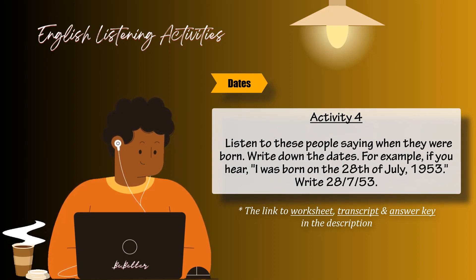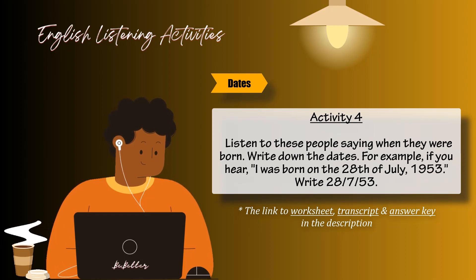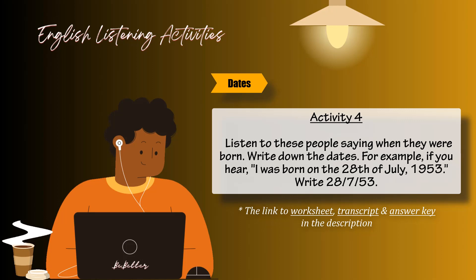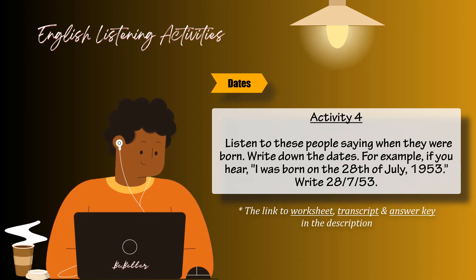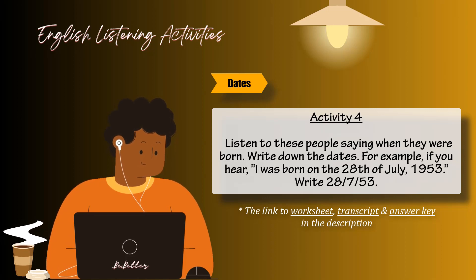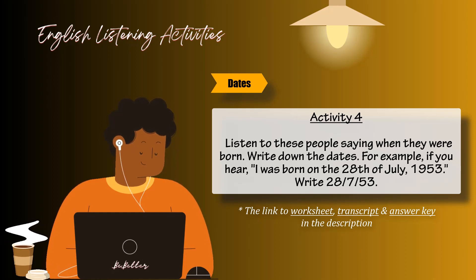Activity four. Listen to these people saying when they were born. Write down the dates. For example, if you hear 'I was born on the twenty-eighth of July, nineteen fifty-three,' write: twenty-eight, seven, fifty-three. One. Could you give me the date of your birth? I was born on the sixth of June, nineteen thirty-nine.